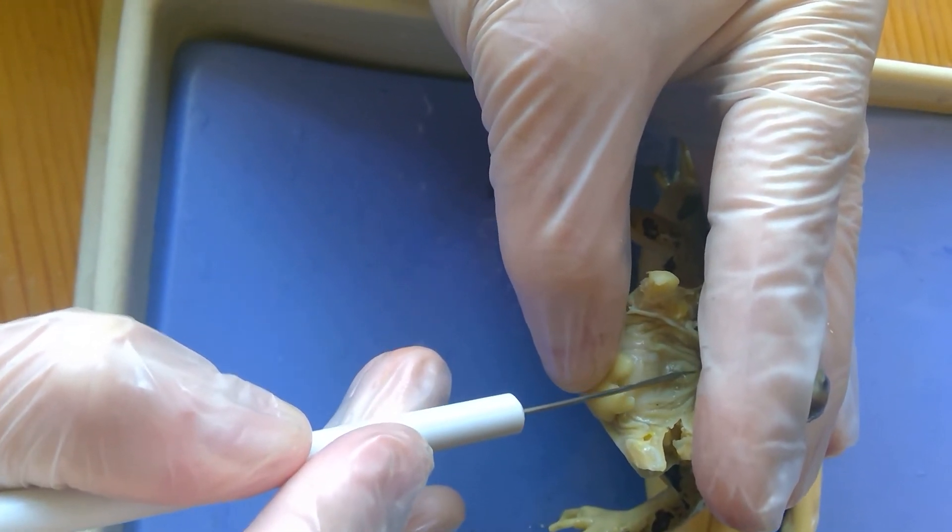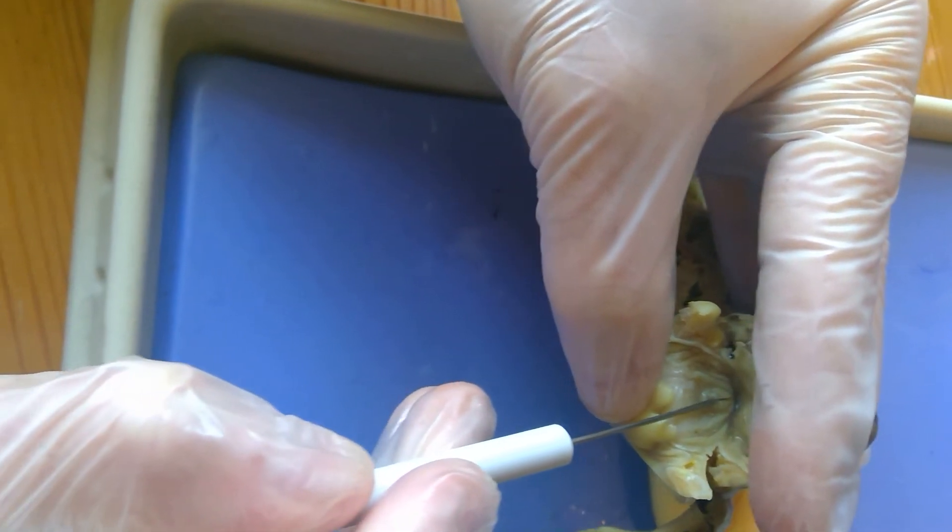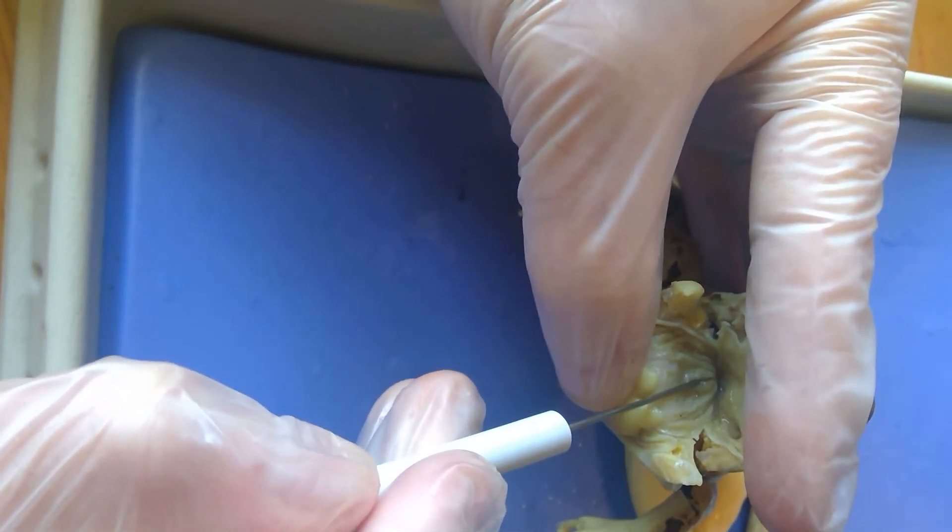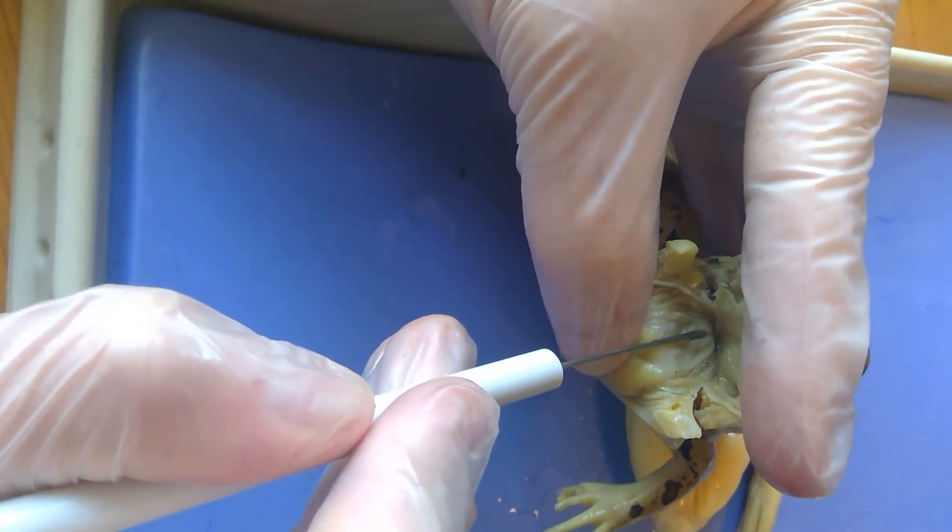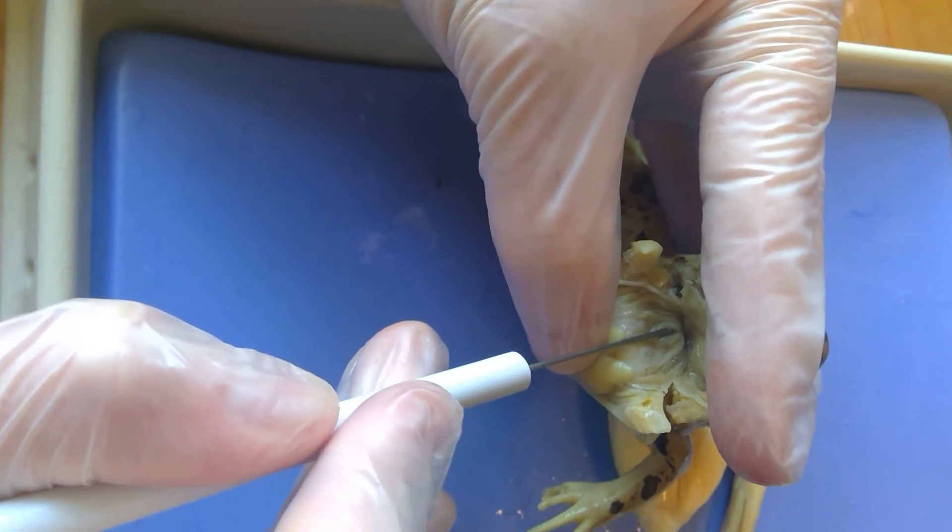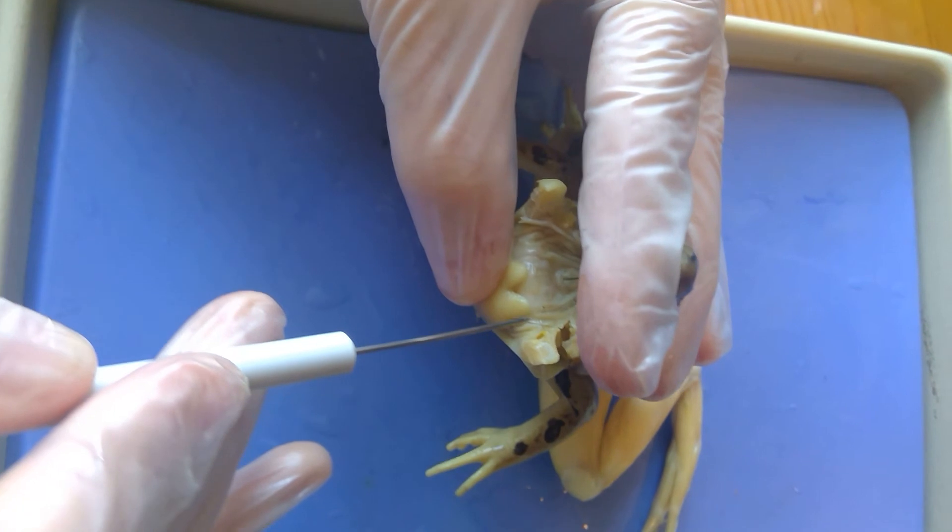So, that hole right there. So this hole right here is going to be called the glottis. And what you see is it has an open little slit right there to open up. And then it normally stays shut.